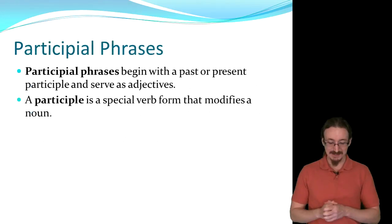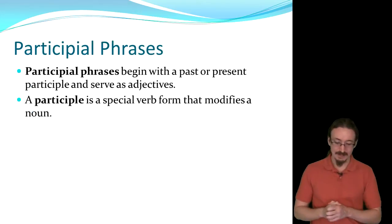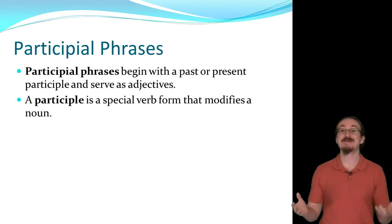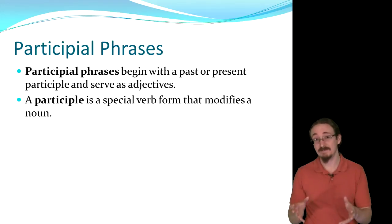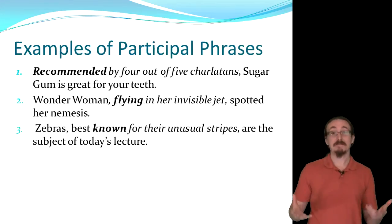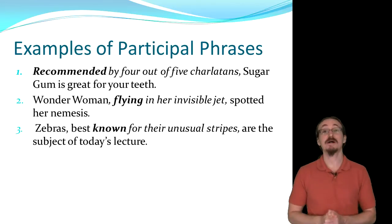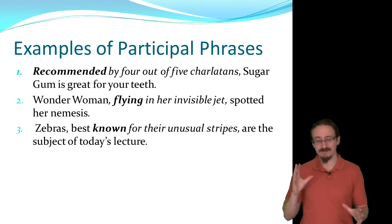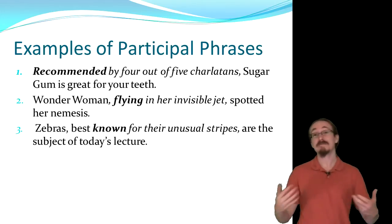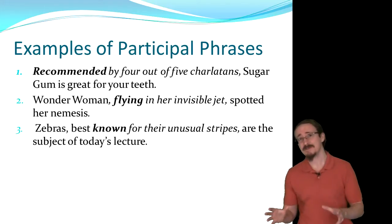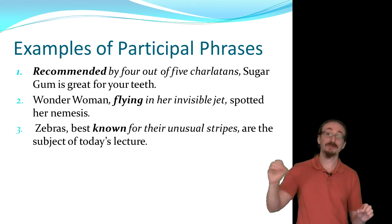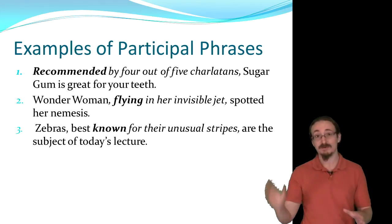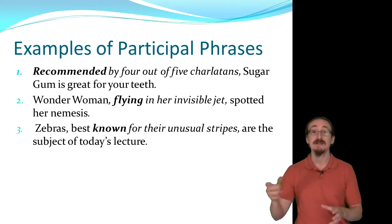Now we'll get into participial phrases. These start with a participle, either a past or present form. A participle is just a verb form — you take a verb and modify it so that instead of telling you what somebody did, it serves as an adjective, basically describing a noun. For example, 'recommended by four out of five charlatans, sugar gum is great for your teeth.' The word recommended could be used as a verb, but here it's an adjective. The whole phrase 'recommended by four out of five charlatans' describes sugar gum, which is a noun.